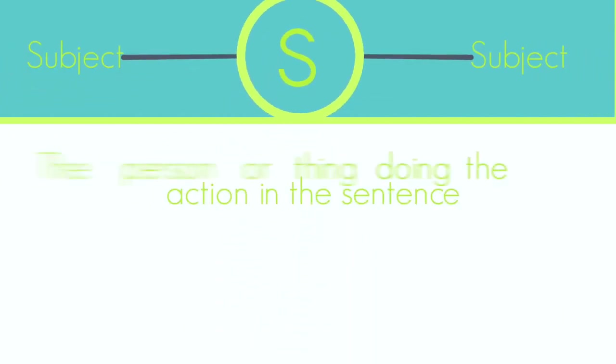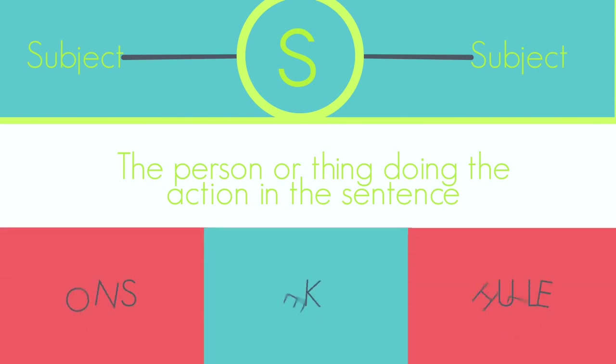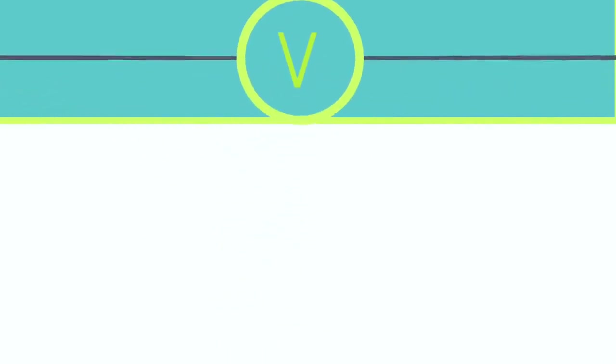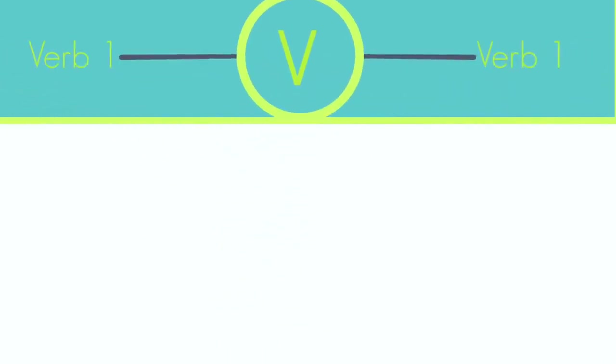The S stands for Subject. The subject is the person or thing doing the action in the sentence. For example, words like 'ons', 'ek', and 'piller' can be subject words. You must remember that context is very important, however.